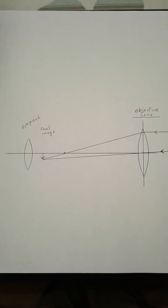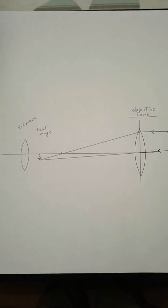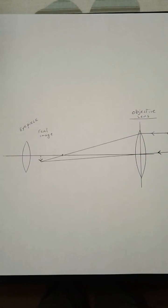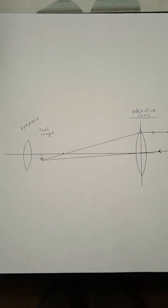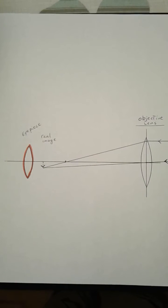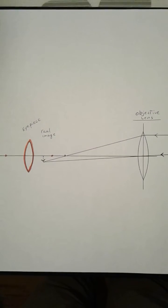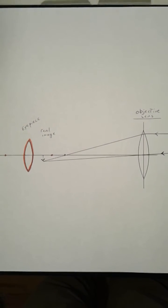The eyepiece is also a convex lens with a shorter focal length. And we're going to move that eyepiece close enough to the image so the real image is within the focal length. Each focus is now drawn on each side of the eyepiece.